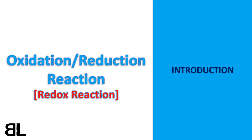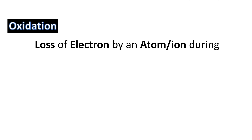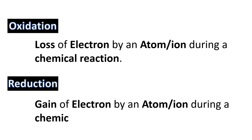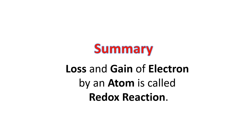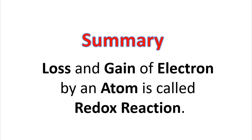In this video I'll be discussing oxidation and reduction reactions. Students, you should know that oxidation and reduction reactions are abbreviated as redox. The simplest concept of oxidation and reduction is the movement of electrons — electrons move between atoms. The definition of oxidation is the loss of electrons by an atom or an ion during a chemical reaction, and reduction is the gain of electrons by an atom or an ion during a chemical reaction.